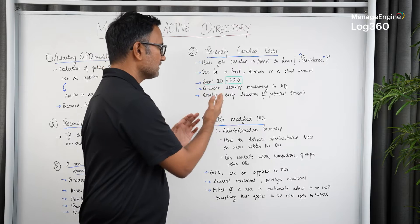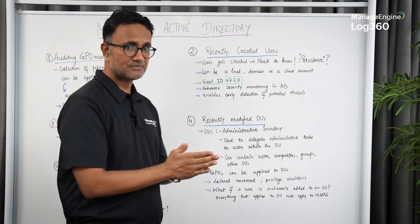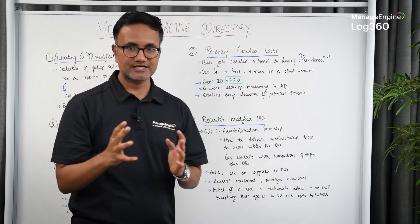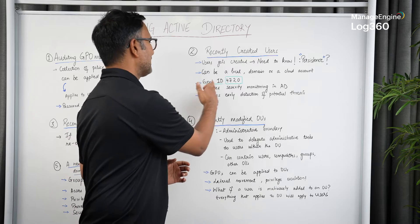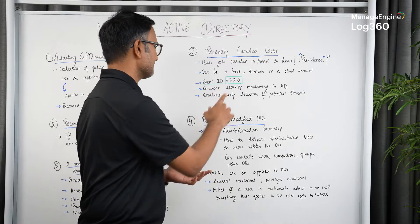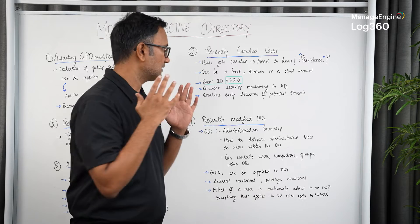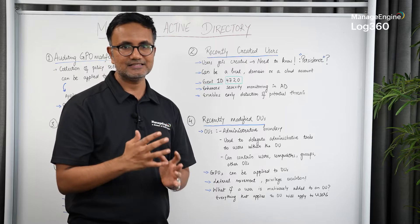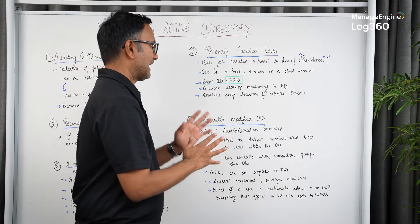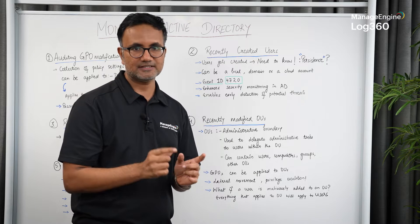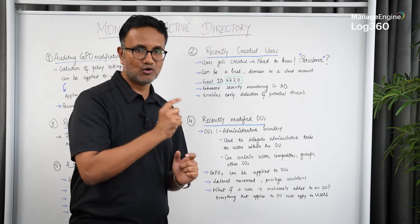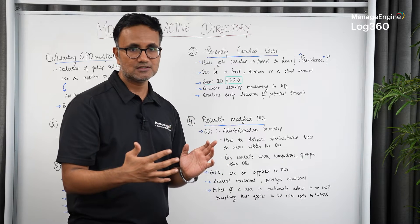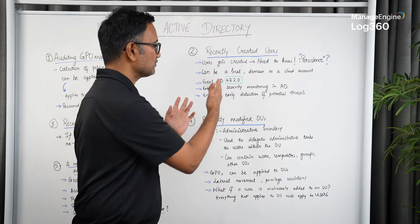It can be a local user, a domain user, or in some cases even a cloud account. When Active Directory is involved, you have to look for event ID 4720. You've got to monitor all recently created users in your network, as that can be indicative of a larger attack. Not every user creation is malicious, but it could be part of the kill chain, and only by monitoring it alongside other activity in Active Directory would you know what really transpired.